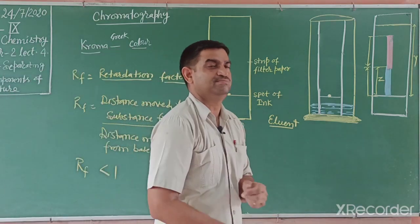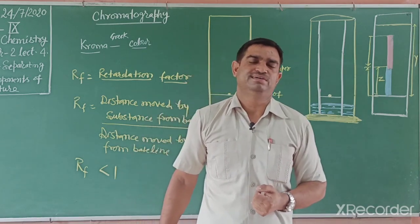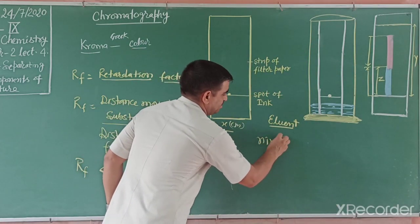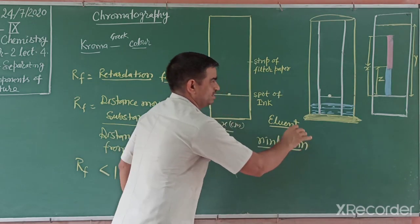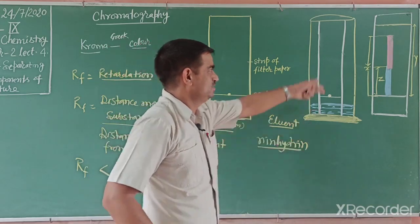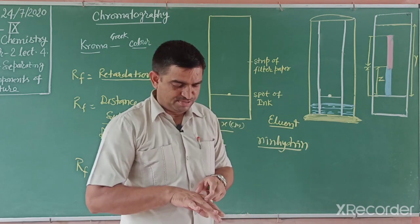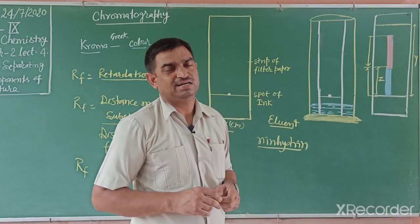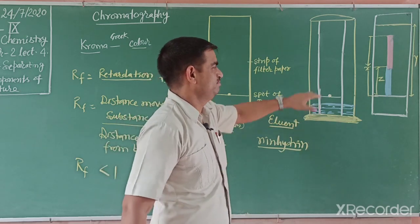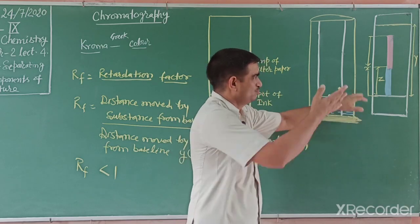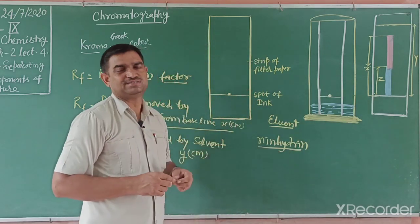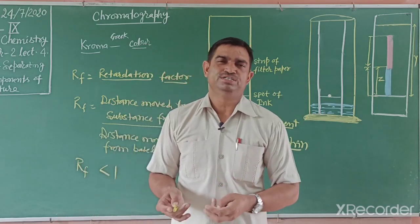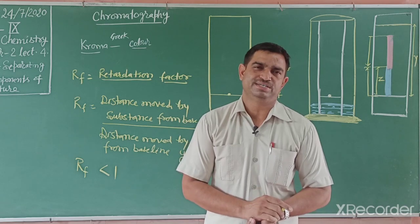Sometimes substances are colorless, like amino acids. In that case we use a chemical called ninhydrin — we spray it on the chromatogram and it produces color so we can see the spots. We can also use ultraviolet radiation, which causes colorless compounds to show color. Another method is to use solid iodine — since iodine sublimes, the colorless substances absorb the iodine vapor and show the color.